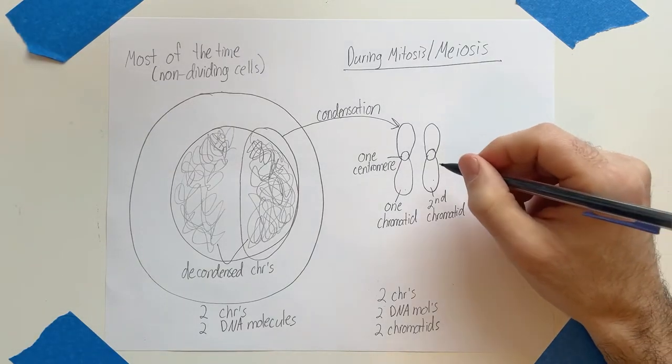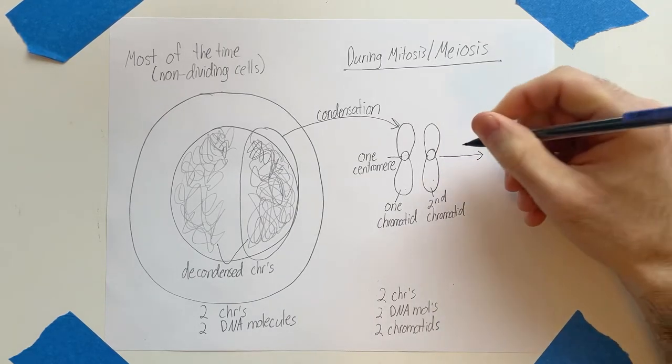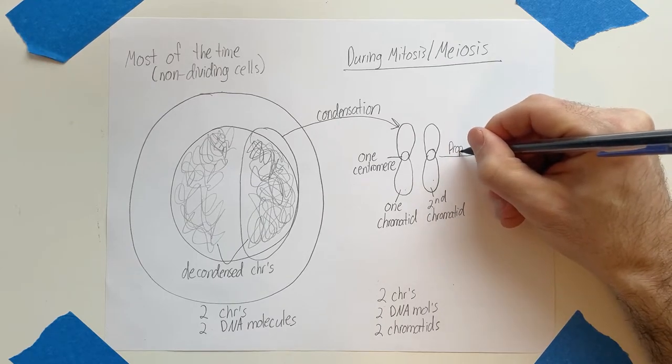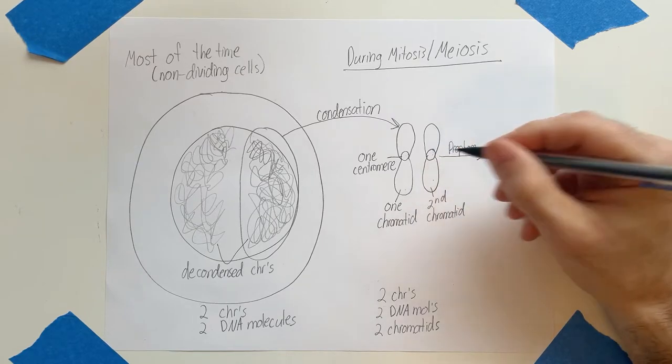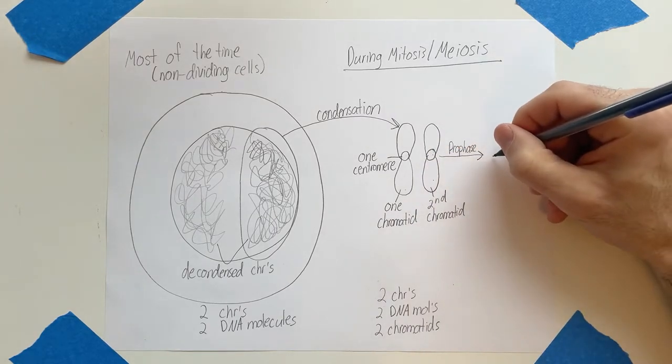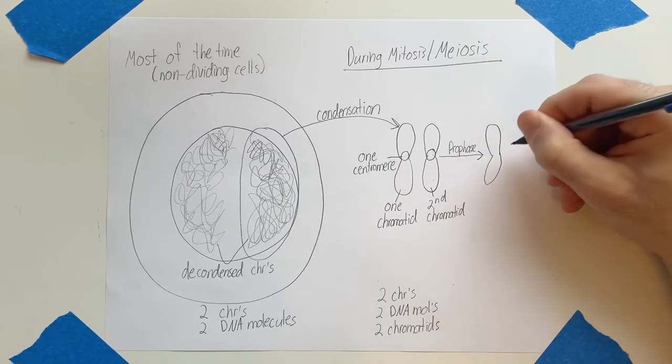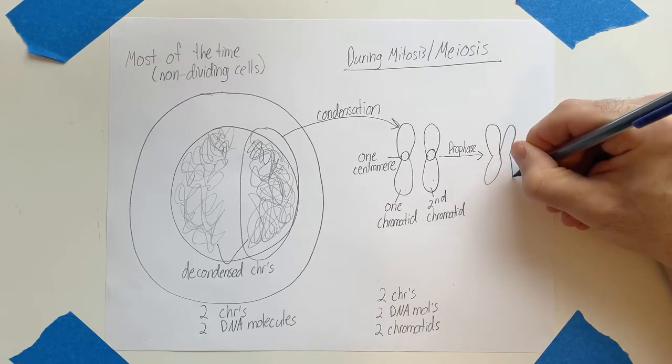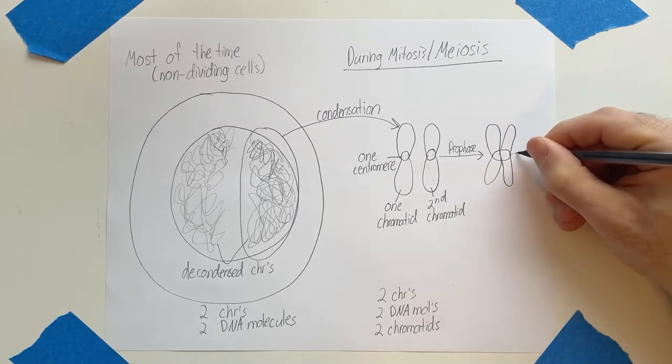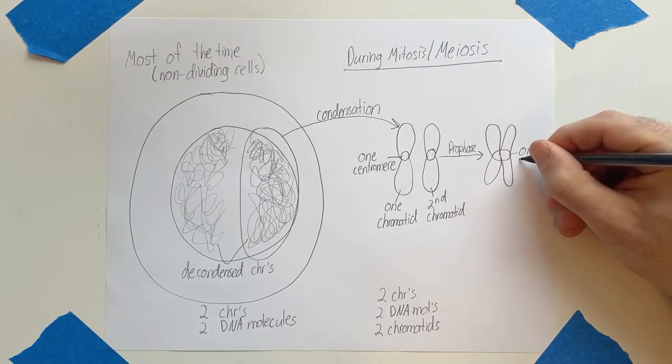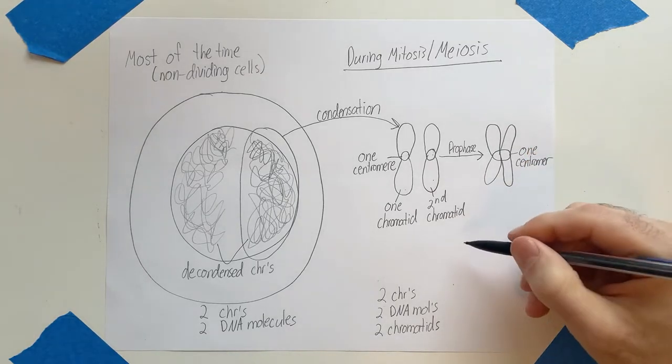Okay. Now, here's the somewhat confusing part. When the cell reaches prophase of either mitosis or meiosis, these chromatids will have paired by then, forming a structure like this. So here's one chromatid. And here's another chromatid. Okay. And now these chromatids share one centromere.